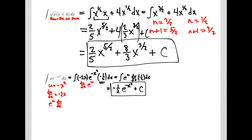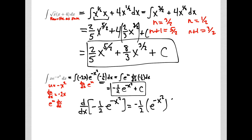Let's double-check this. The derivative of negative 1 half e to the negative x squared gives negative 1 half as a constant, times e to the same u, times the derivative of that u. The negative 1 half and the negative 2 cancel, leaving me with x times e to the negative x squared — that's what my original integrand was. So we found the right value. That's how I do indefinite integrals: I'm looking for functions that when I take their derivative, I recover the function in the integral.